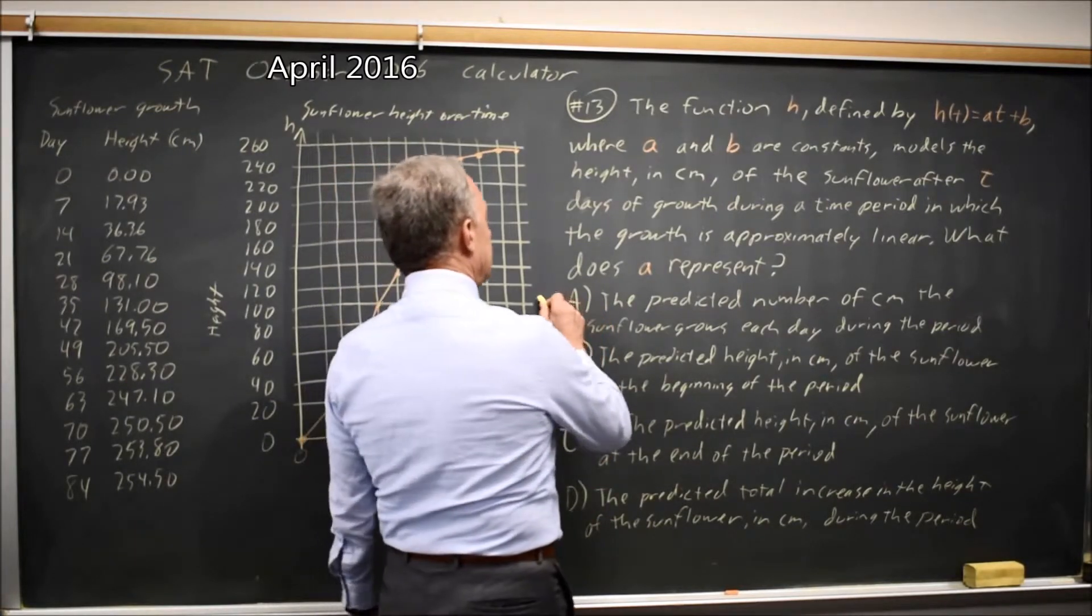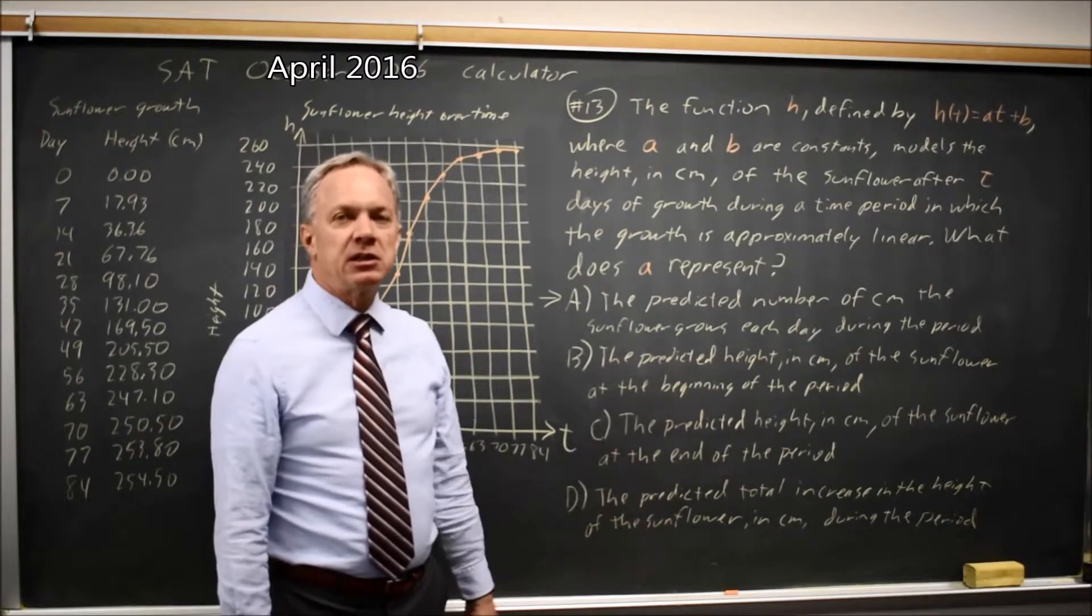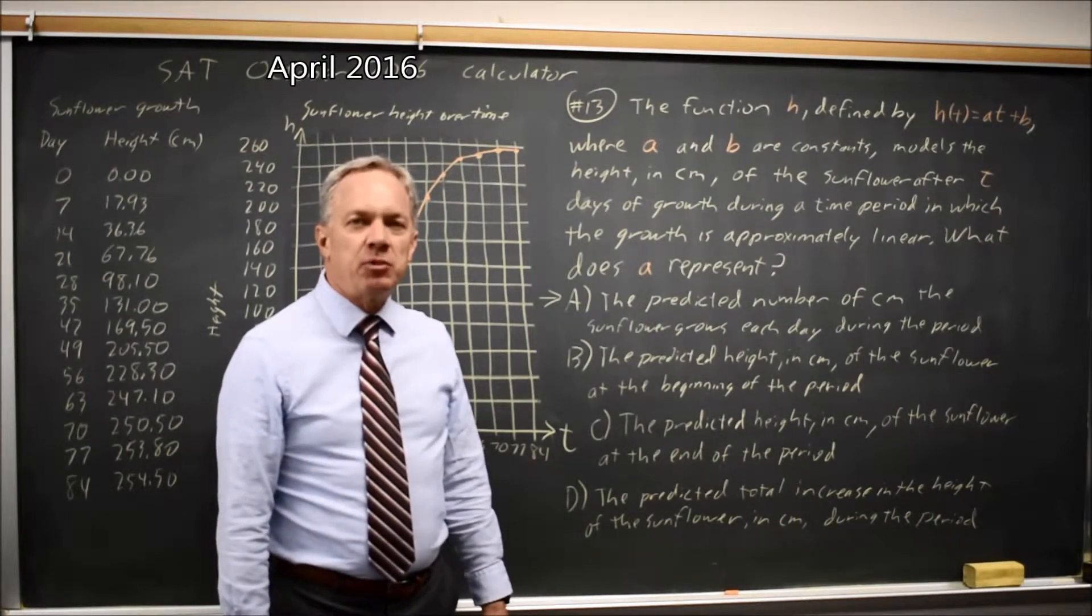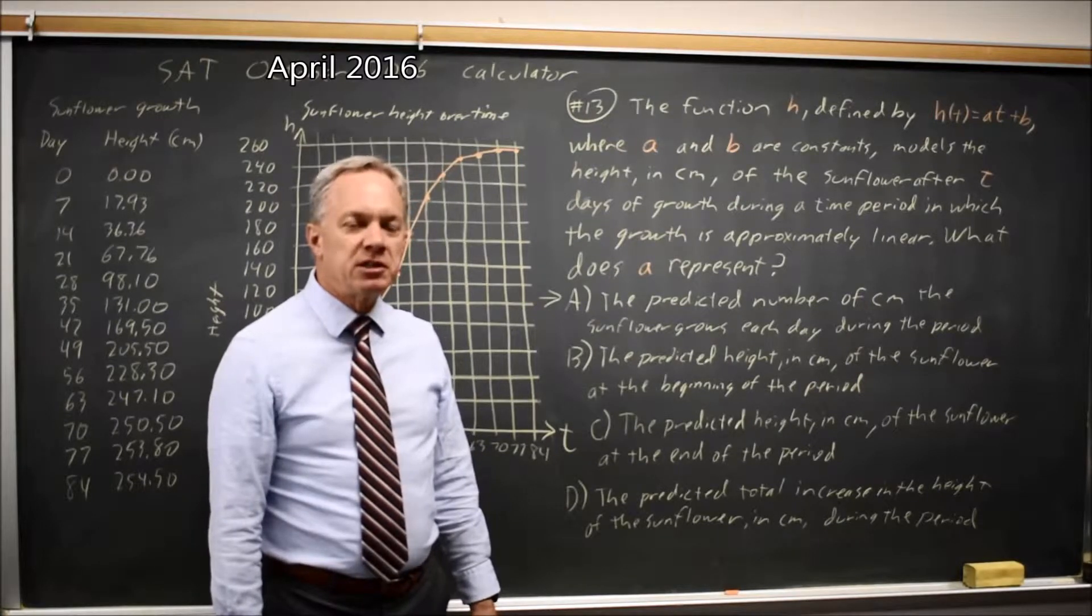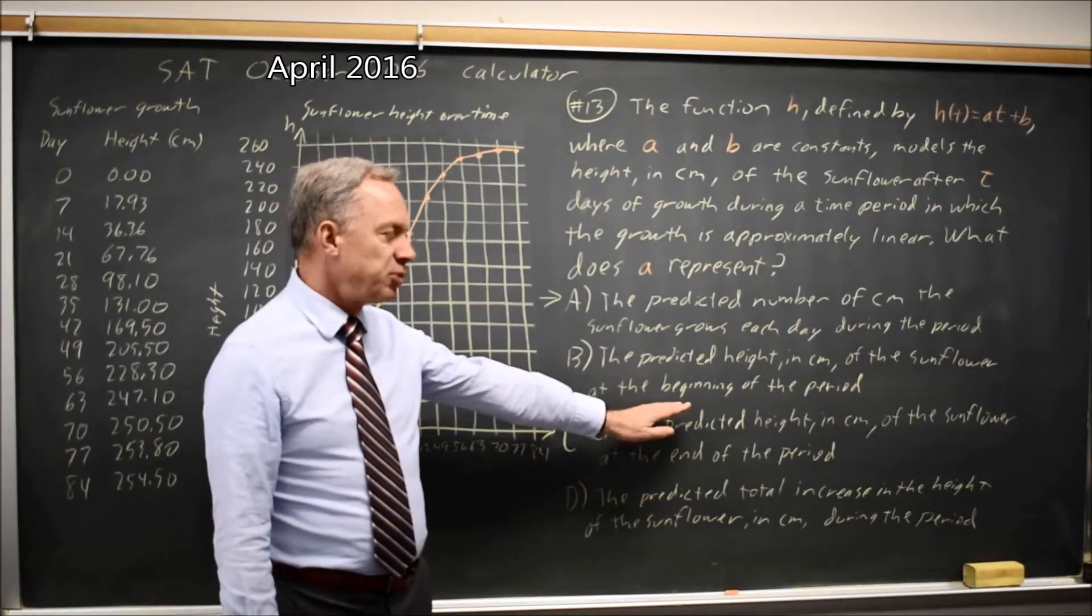So choice a would be correct. Choice b, predicted height of the sunflower at the beginning of the period. In h of t equals at plus b, b would be the y-intercept, the predicted height at time zero, but that's not necessarily the beginning of the time period.